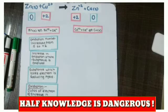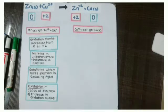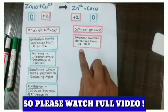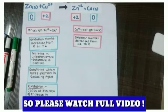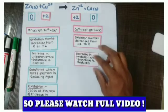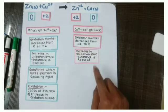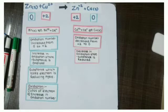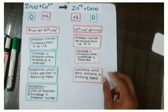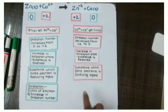Now in this reaction, the oxidation number decreased from +2 to 0. Also there is decrease in oxidation state. The decrease in oxidation state means the substance is reduced. The substance which gains electrons is an oxidizing agent.